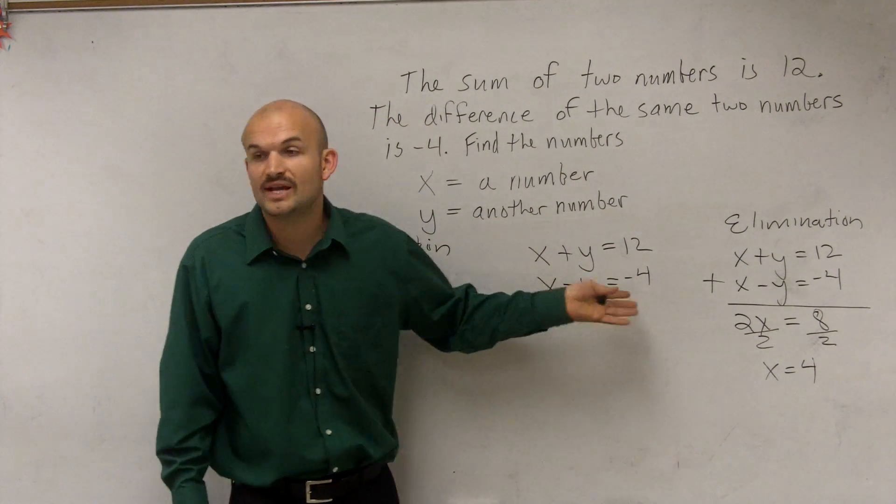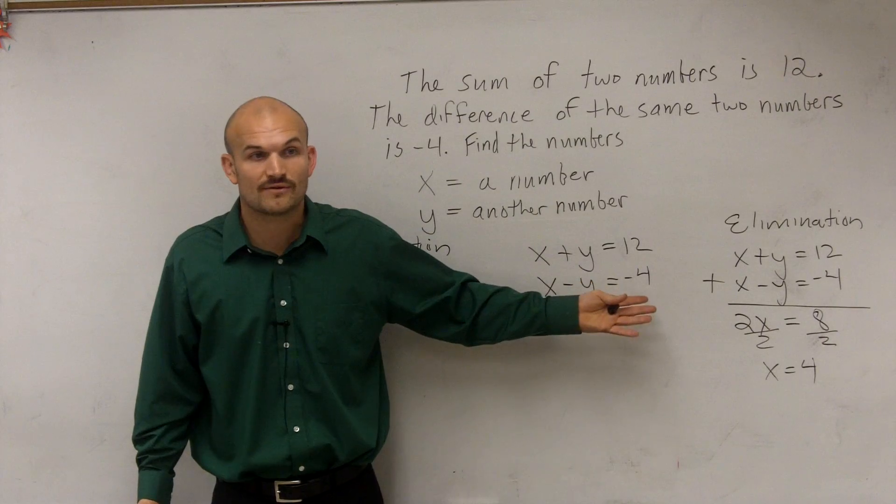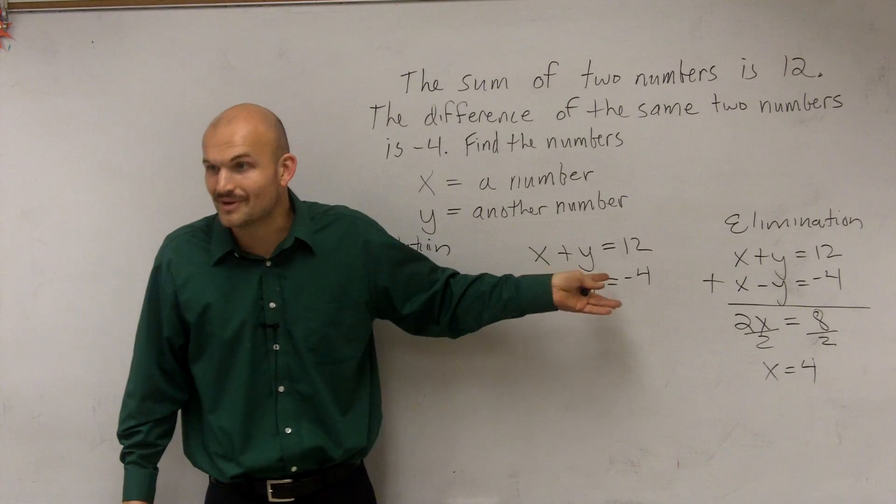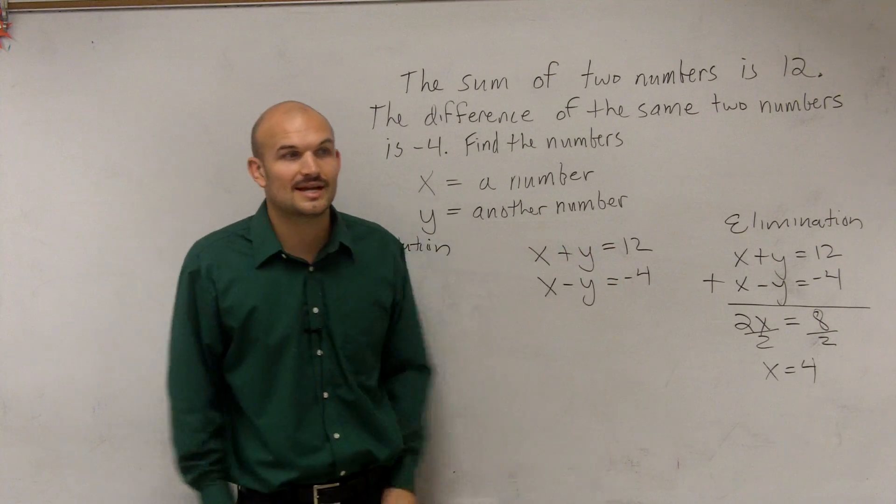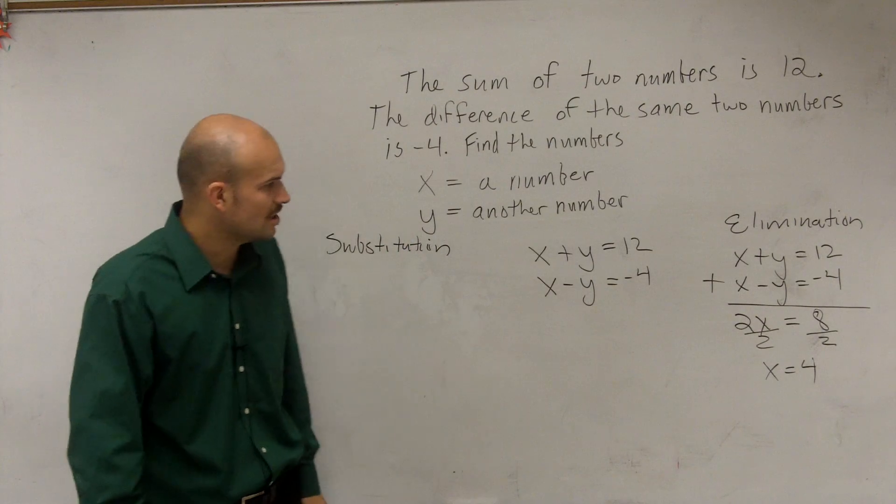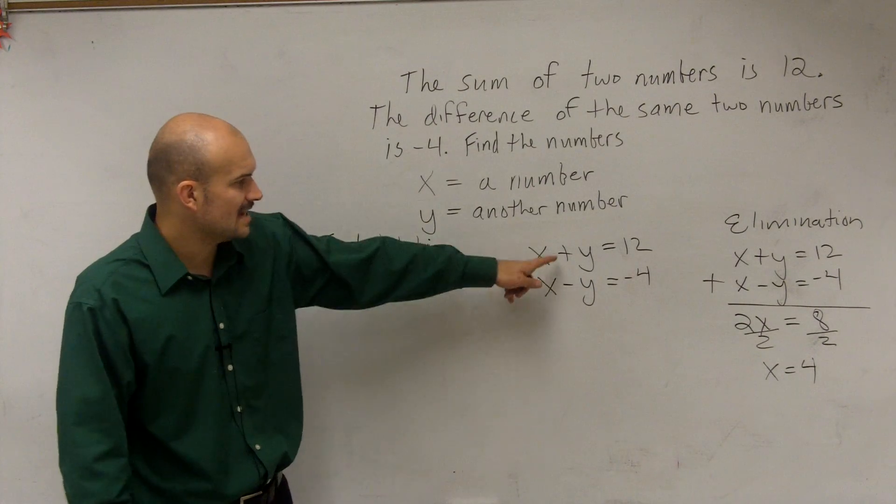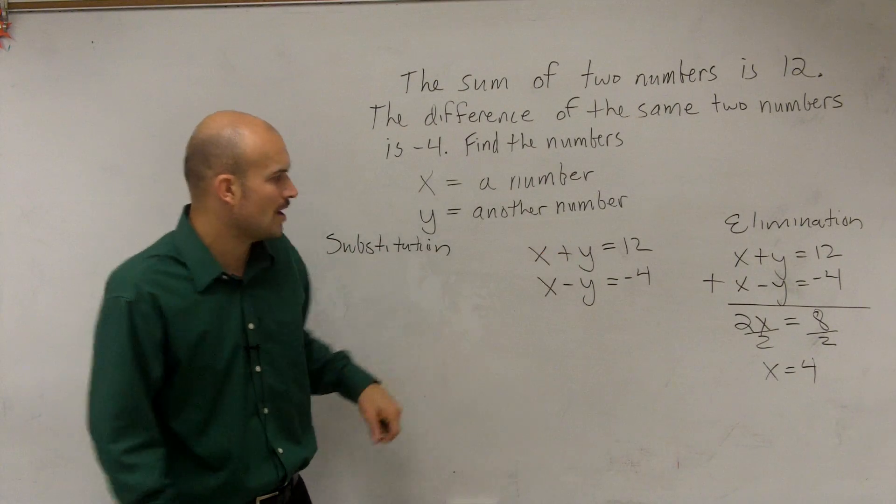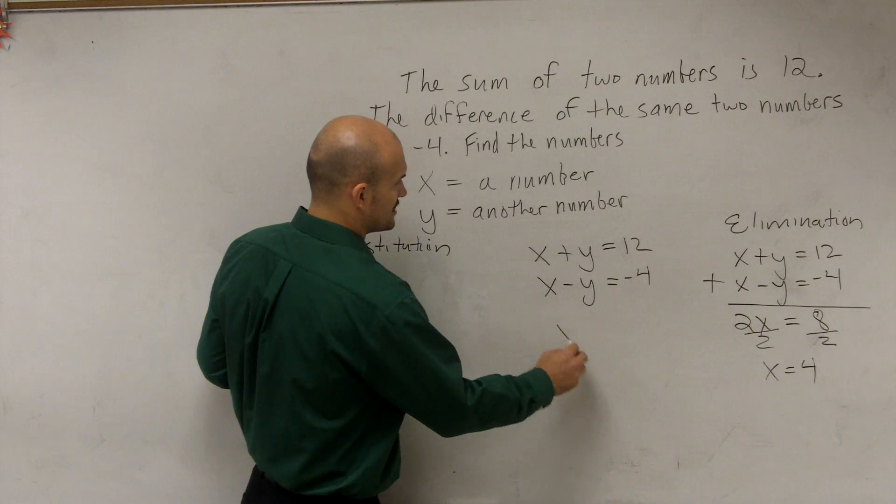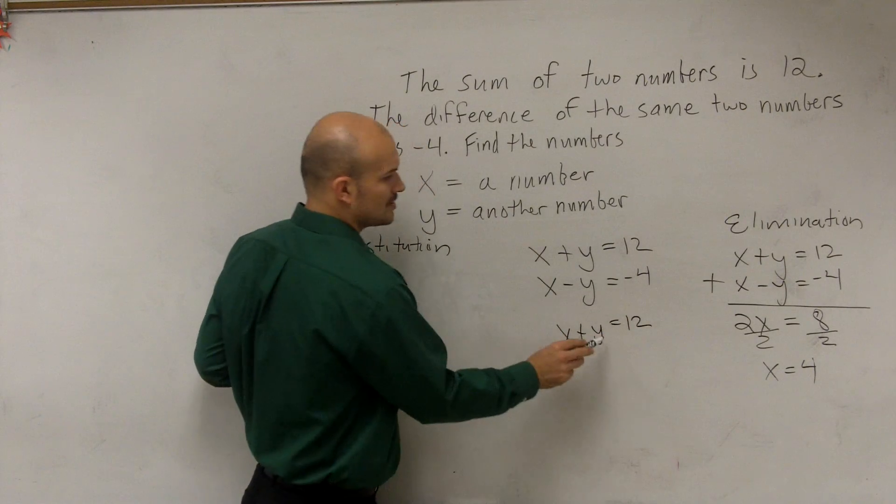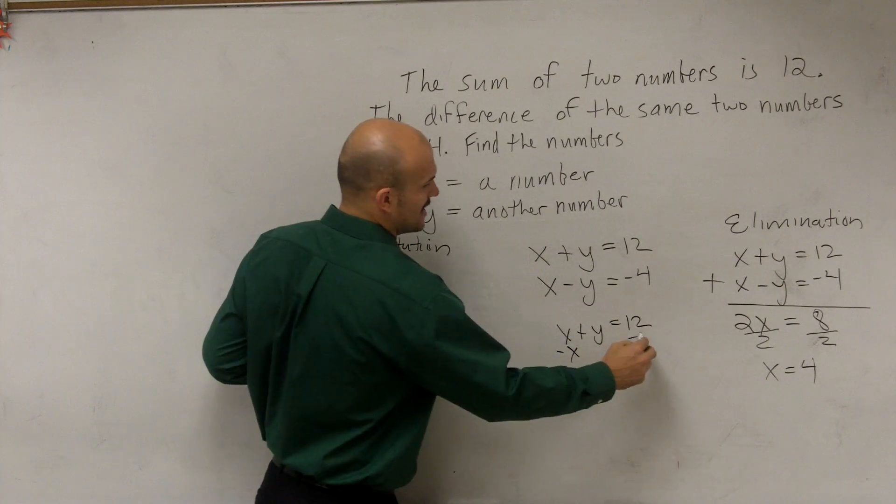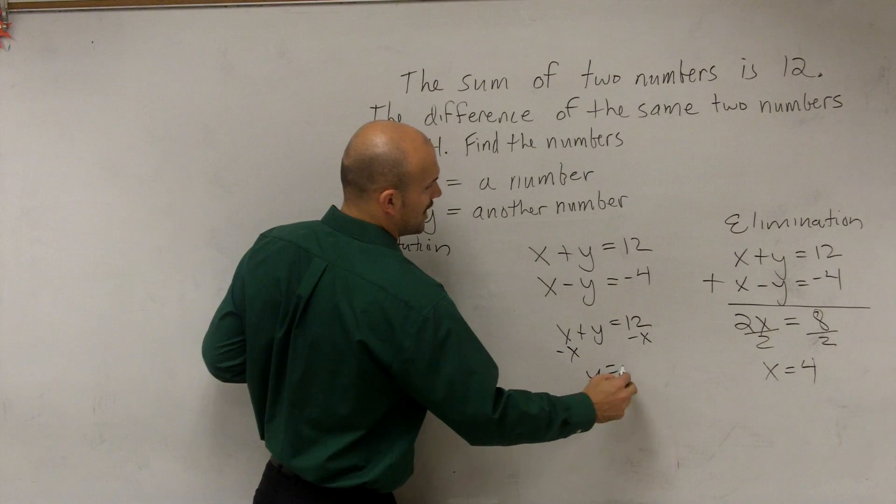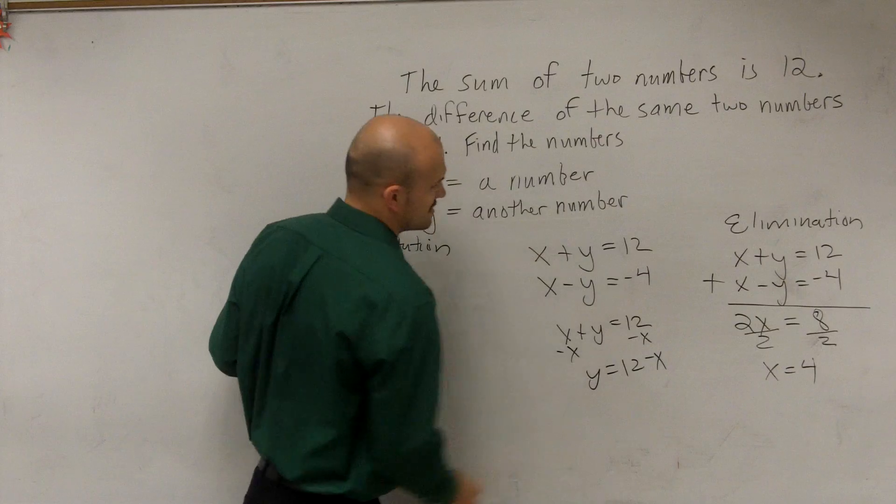Remember, you need to pick a variable that has a 1 or a negative 1 in front. Well, they all have 1 or negative 1, right? So you really get to choose which variable you want to solve for. And in this case, I'm going to solve for this y. So to do that, all I do is x plus y equals 12. Well, to solve for this y, I subtract an x on both sides, and I get y equals 12 minus x.